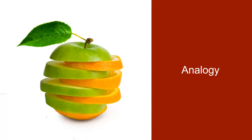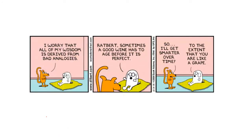Let's talk about analogies. There's a Dilbert cartoon — I'll let you take a moment to take that in. It sums it up: you've got an analogy where a good wine has to age before it's perfect, and the implication is that if I am like a good wine, I also will have to age before I get perfect, so I'll get smarter over time. Then Dogbert says 'only to the extent that you are like a grape.' The strength of an analogy relies largely upon the similarities between the two things being compared.